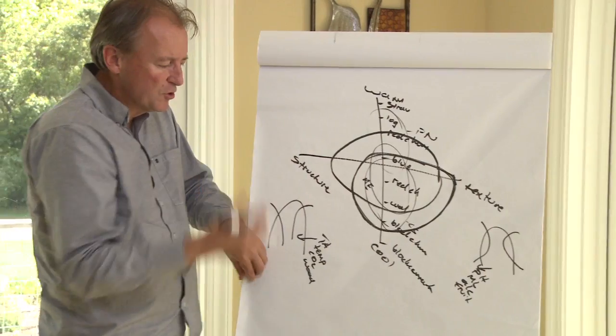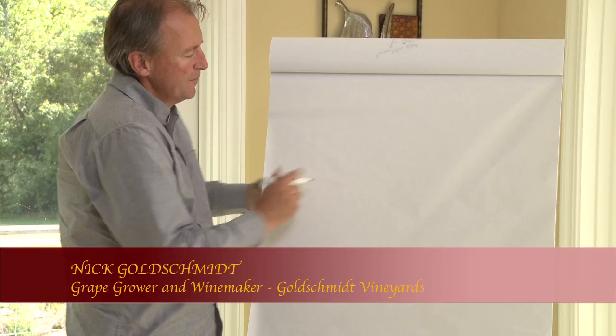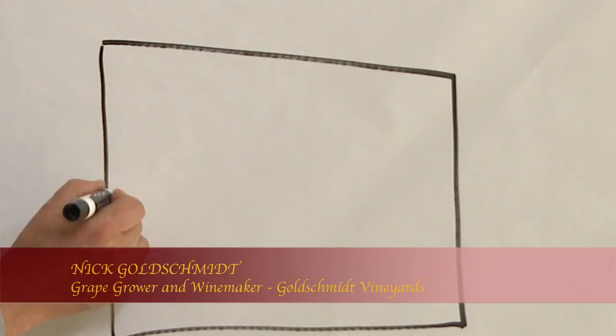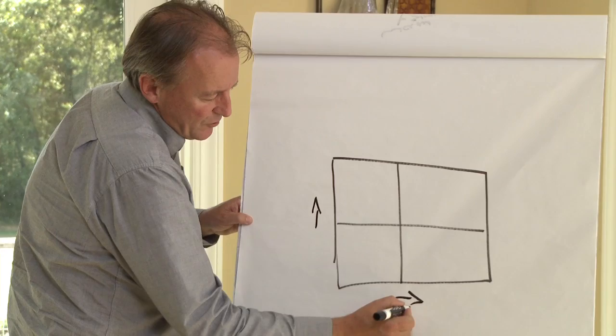Now, if I was to draw that together on one chart, complexity, which I just talked about. Complexity is a combination of structure and texture, so having all those things together. And so if we were to put complexity here, and we were to put tannin here.